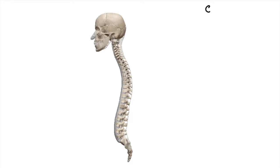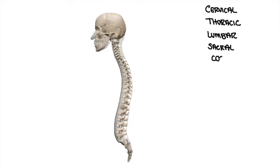We have the cervical, thoracic, lumbar, sacral, and coccyx regions. If we were to look at these segments of the spine in either an anterior or posterior view, we would simply see one vertebrae on top of another. And in looking at it from either of those views, we would miss the normal curvature of the spine.